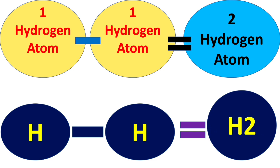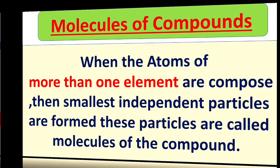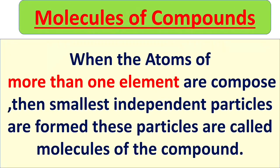Next is molecules of compounds. When the atoms of more than one element are composed or combined, then smallest independent particles are formed. These particles are called molecules of the compound.